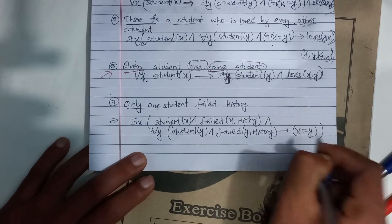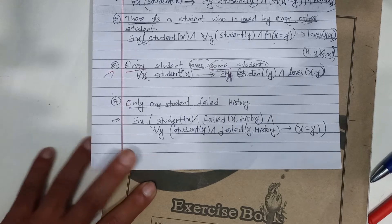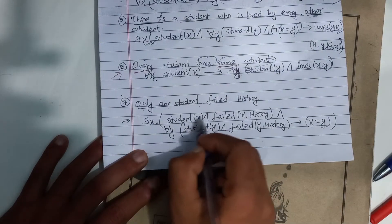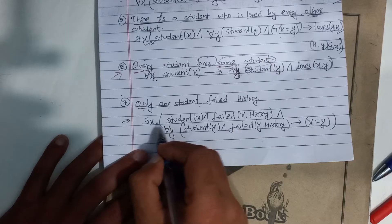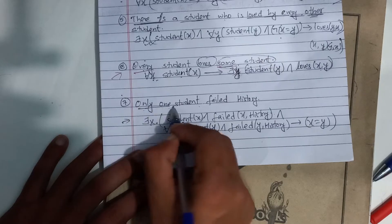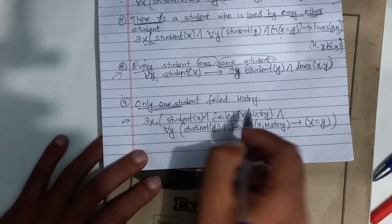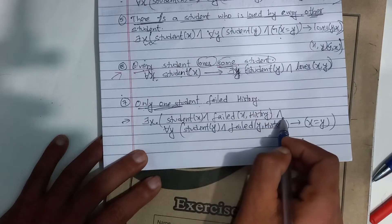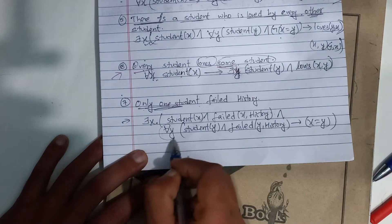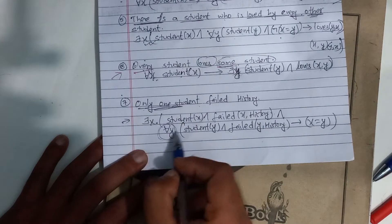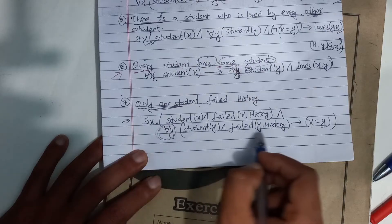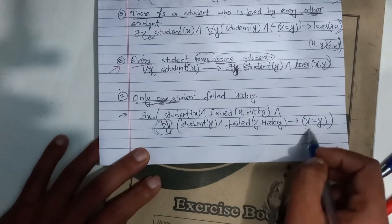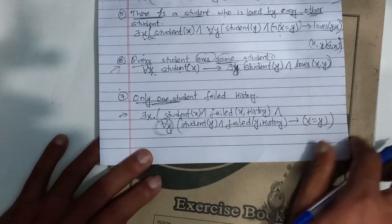There exists Yax: Yax is student and Yax failed history — it is only one. It means that for all Y, if Y is student and Y failed history, it implies that Yax equals Y. So Yax is student and failed history, and Y failed history implies Y equals Yax — so Yax is student.